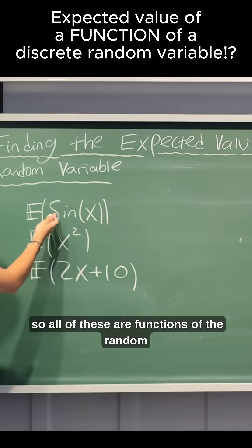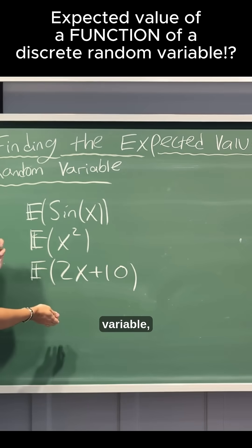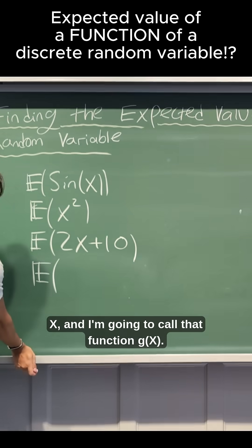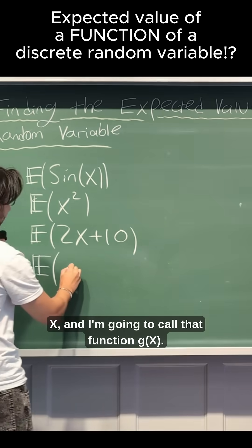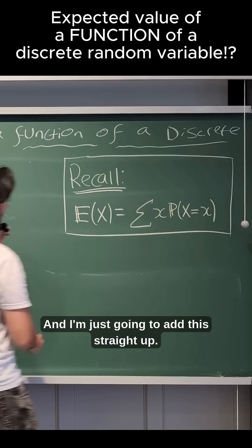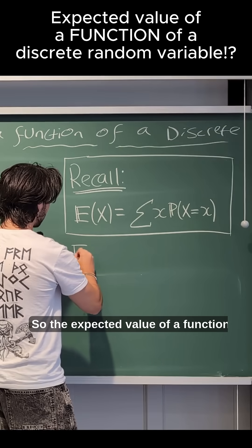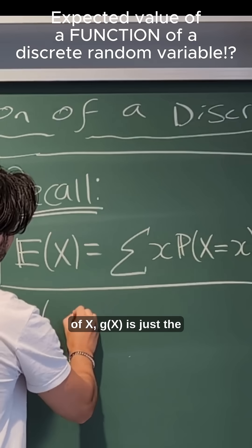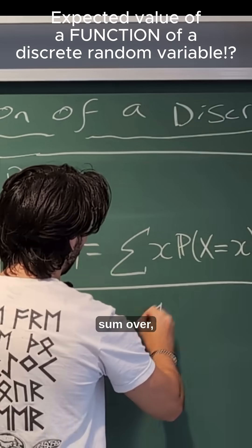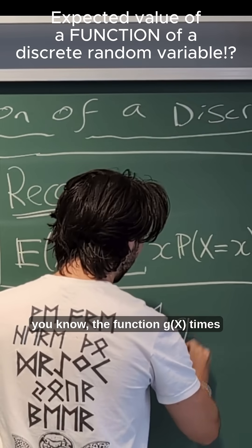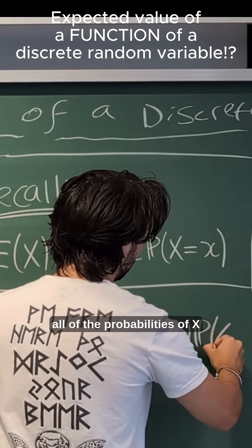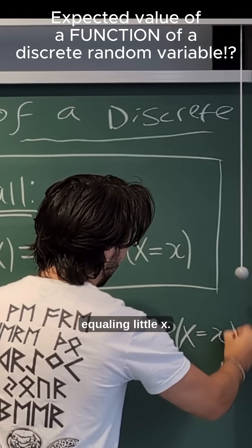All of these are functions of the random variable. We're looking at the expected value of a function of X, and I'm going to call that function g(x). In general, the expected value of g(x) is just the sum of g(x) times the probability of X equaling little x.